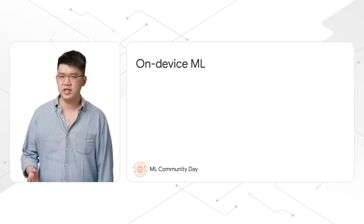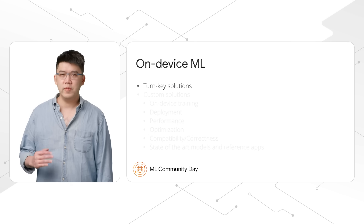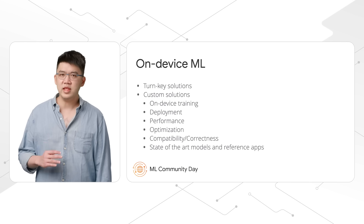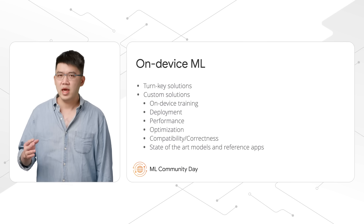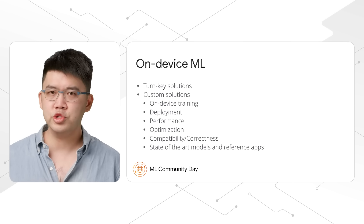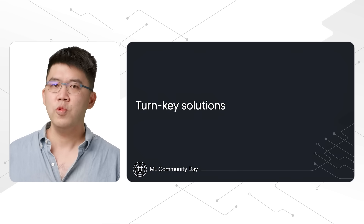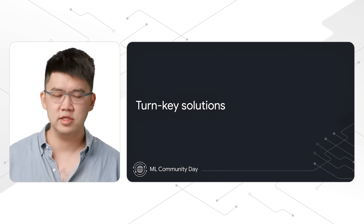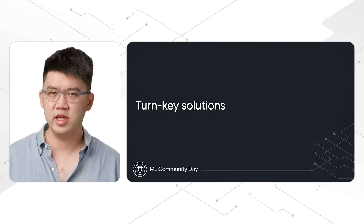What is on-device machine learning? Google offers a range of machine learning solutions to enable running TensorFlow models on your mobile phones, including Android and iOS, web, and even microcontrollers. Turnkey solutions are easy-to-use, production-ready APIs to tackle common machine learning tasks. You should start with turnkey solutions and see if they meet your needs. For more custom use cases, we help you train and optimize your model, integrate it in your app, and deploy it in production. We offer easy-to-use production APIs through the ML Kit SDK as turnkey solutions.